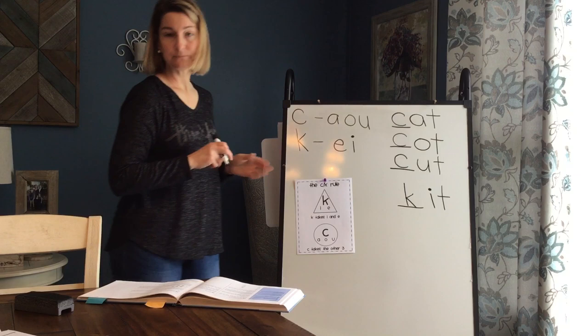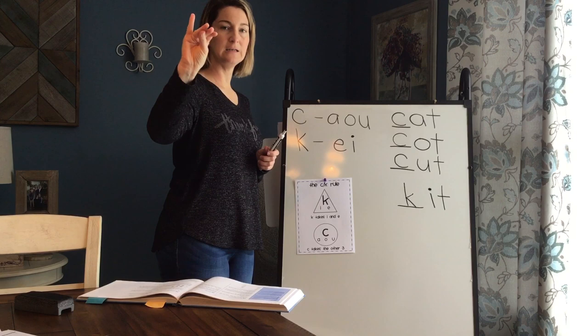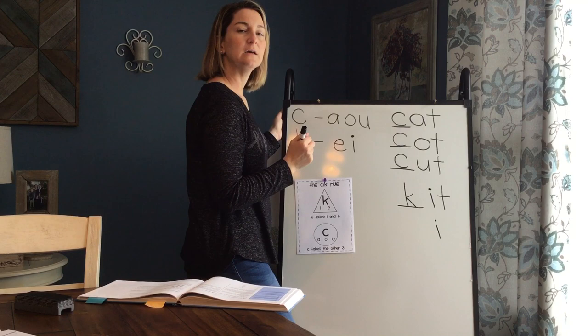Last one. K, i, d. Kid. K, i, d. Kid. Very good. Again, what vowel do you hear in that? I, i, i. I hear an I. Kid.